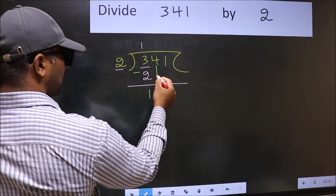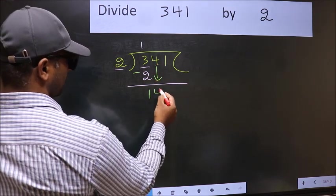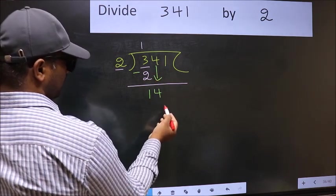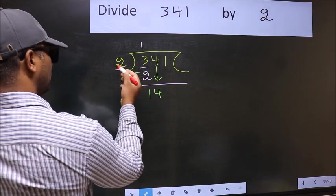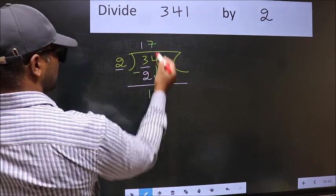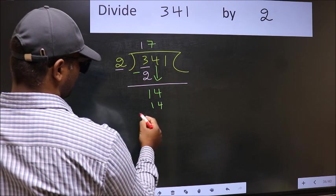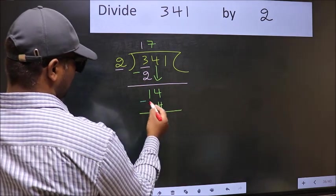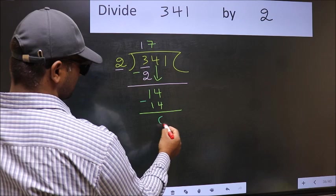After that, bring down the beside number. So 4 down. Now 14. When do we get 14 in 2 table? 2 sevens, 14. Now you should subtract. 14 minus 14, 0.